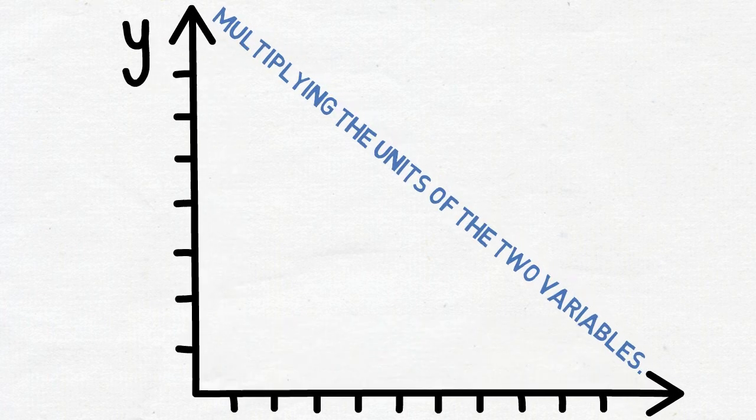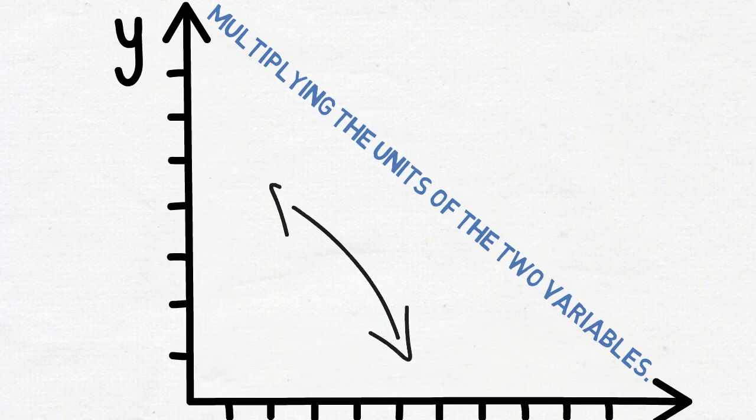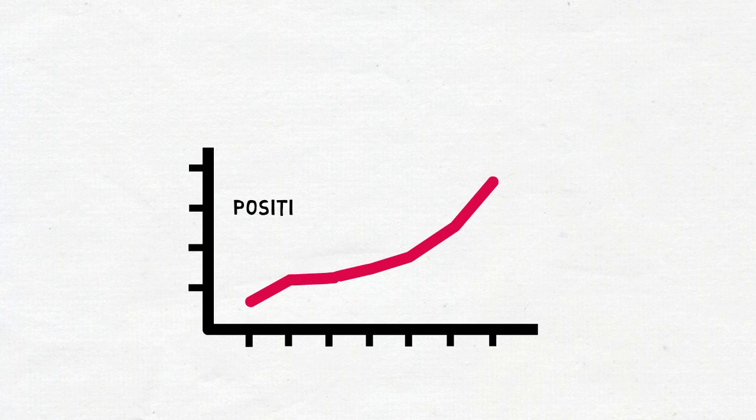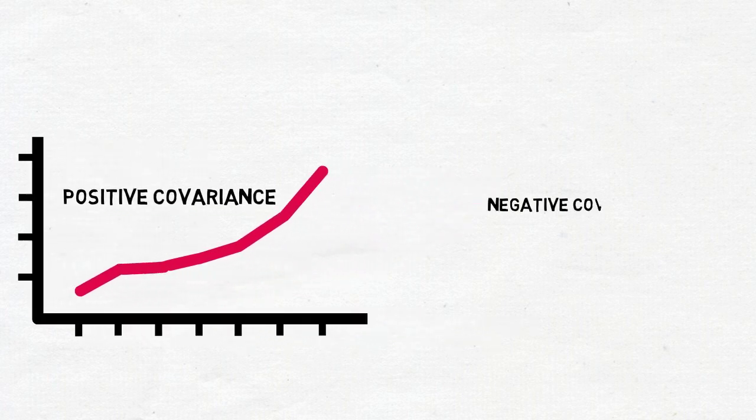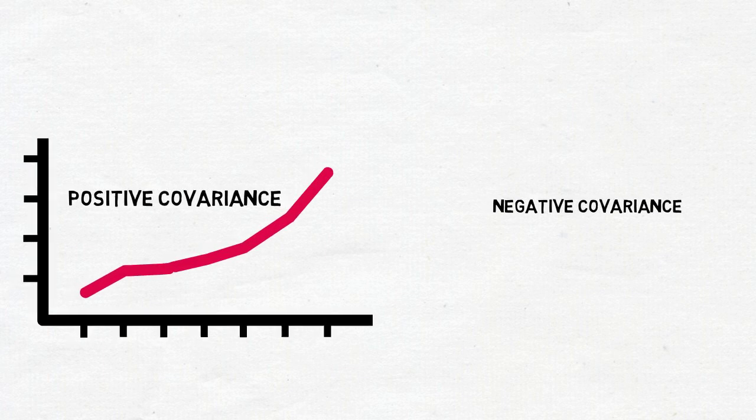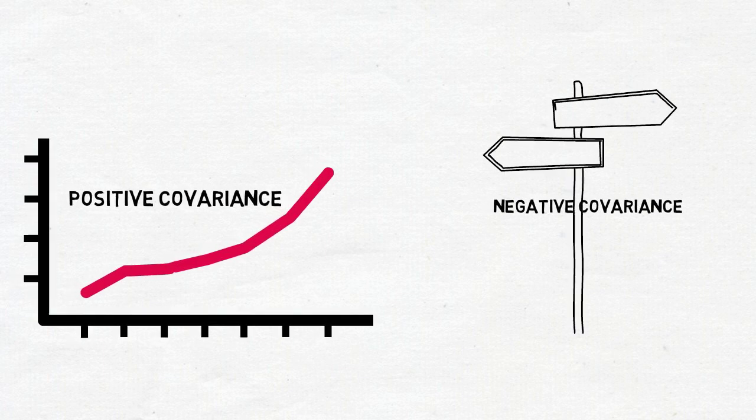The variance can take any positive or negative value. Positive covariance indicates two variables tend to move in the same direction and negative covariance reveals that they tend to move in an inverse direction.